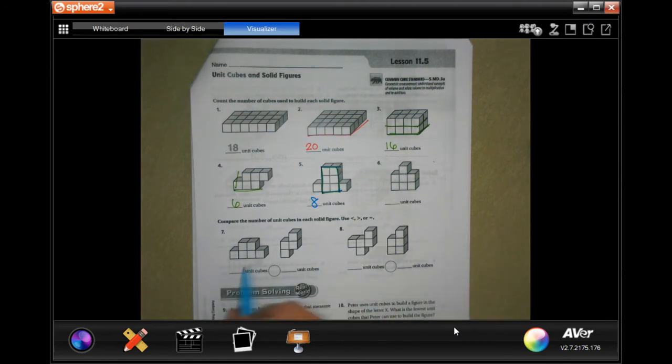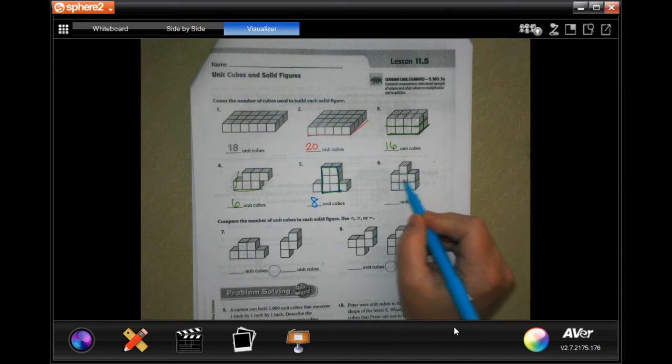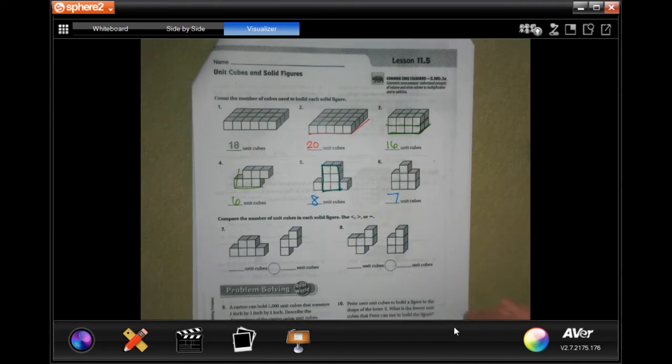All right, so 1, 2, 3, 4, 5, 6, 7 blocks, done. There's only one row of them, so you can just count the blocks.